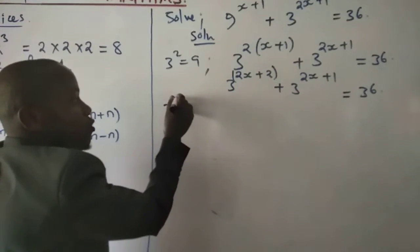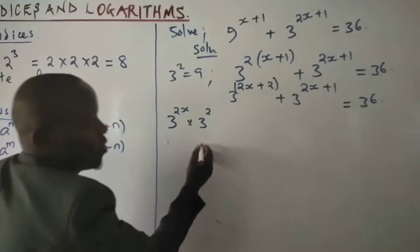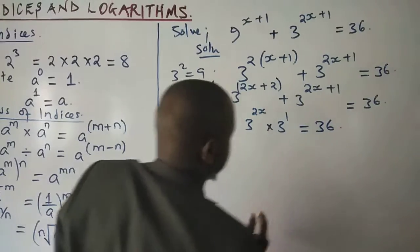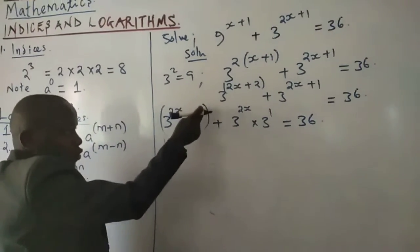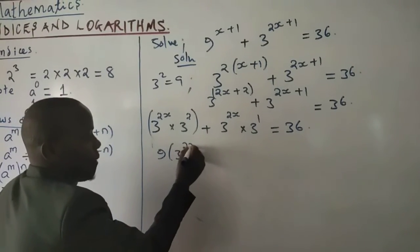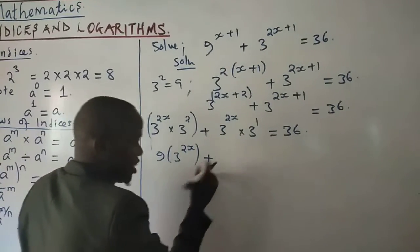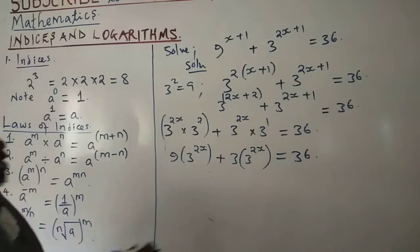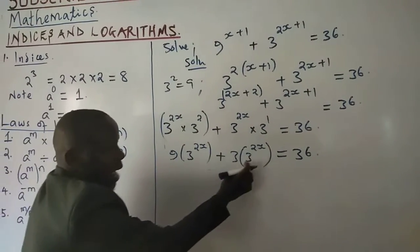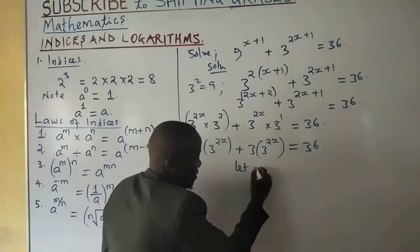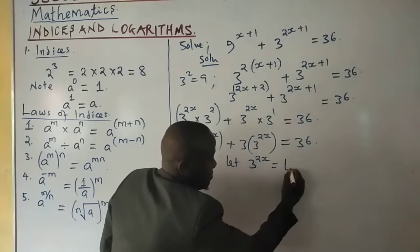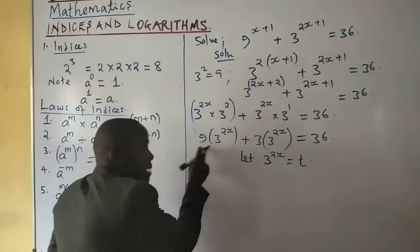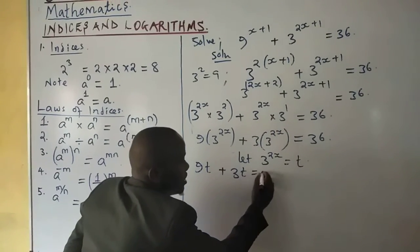So the equation becomes 9 × 3^(2x) + 3 × 3^(2x) = 36. Since 3^(2x) is the only unknown, we let 3^(2x) = t. The equation becomes 9t + 3t = 36, which simplifies to 12t = 36.